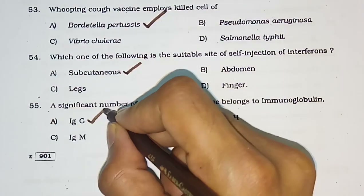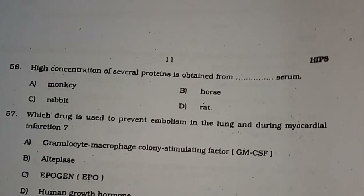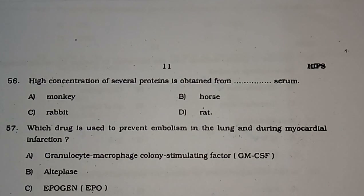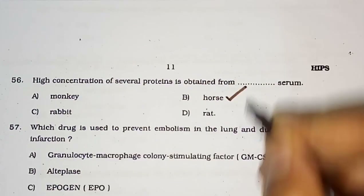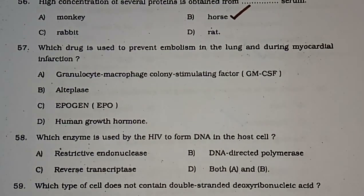Question number 55: A significant number of antibodies now in use belongs to immunoglobulin — options IgG, IgH, IgM, IgI. The correct answer is IgG. Question number 56: High concentration of several proteins is obtained from — serum of monkey, horse, rabbit, or rat. Horse is the correct answer.